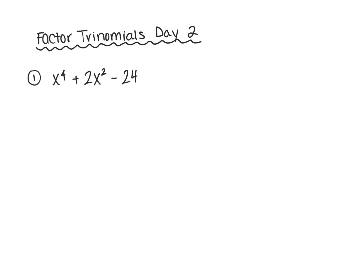So if we look at this scenario — three terms, therefore a trinomial — our leading coefficient here is 1. Since our leading coefficient is 1, we're definitely going to use AM. We want to ask ourselves the same concept as yesterday: what numbers add to 2 that multiply to negative 24? We can go to the calculator, go to y equals, and put negative 24 divided by x, then look at the table by hitting second graph. Take a minute, find those values, pause the video, and hit resume when you're ready for the answers.